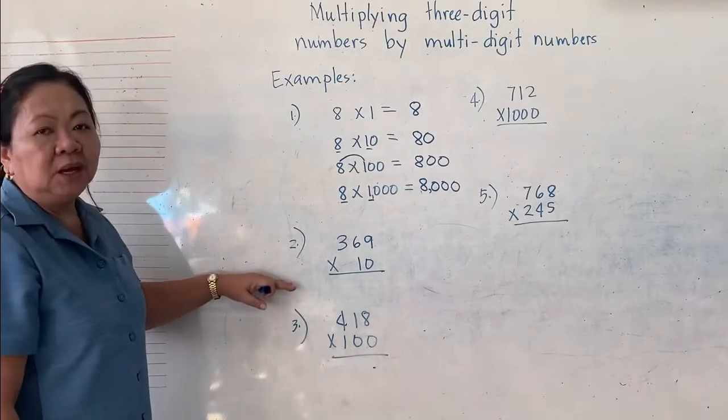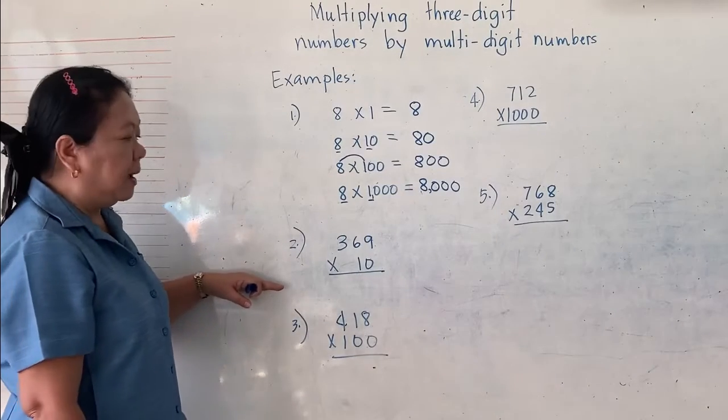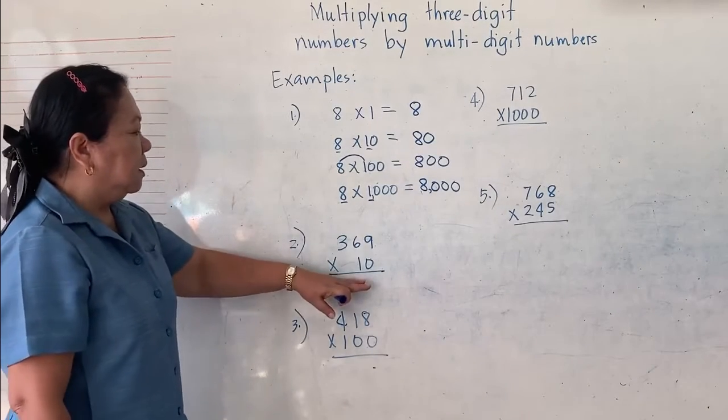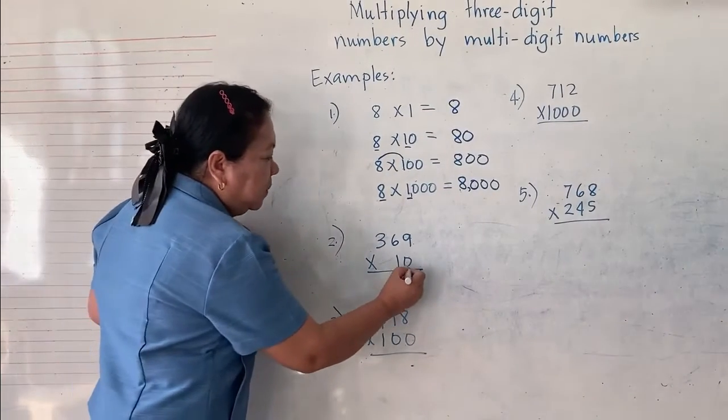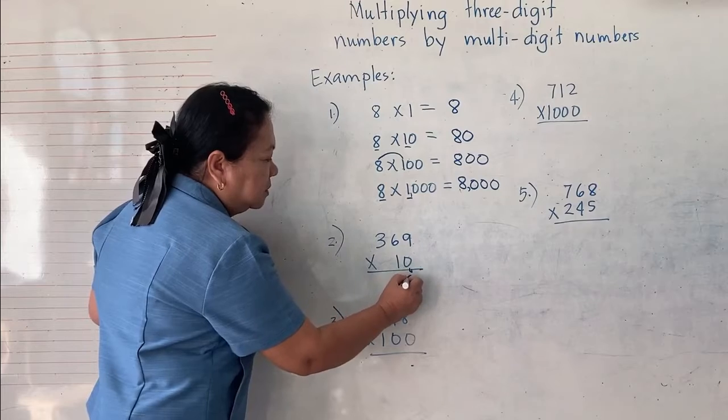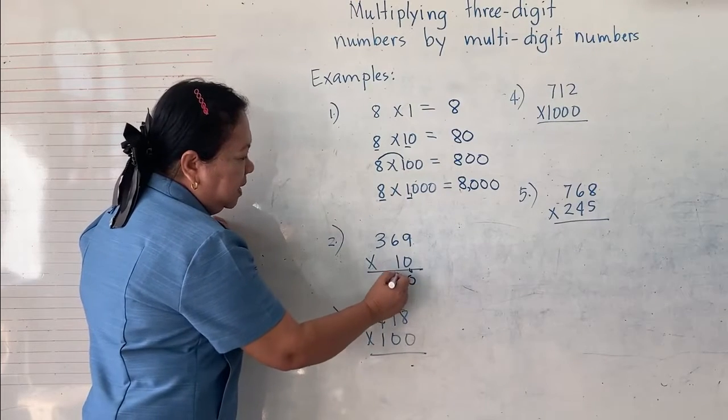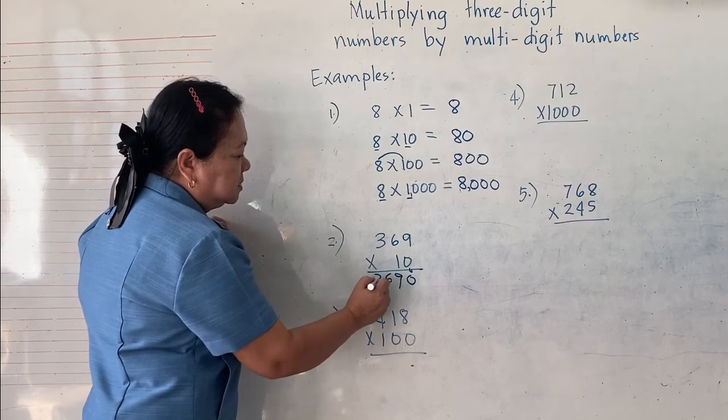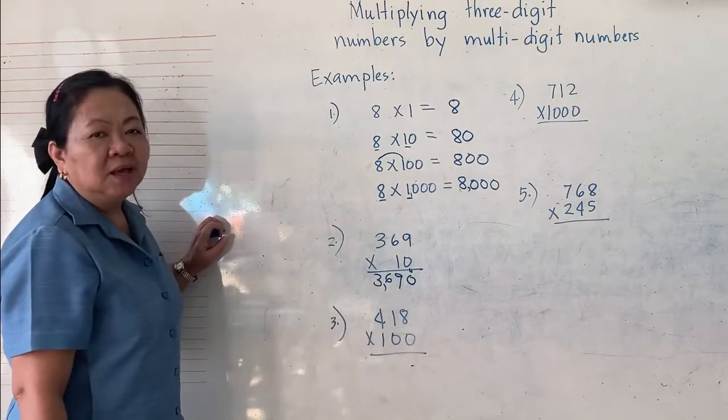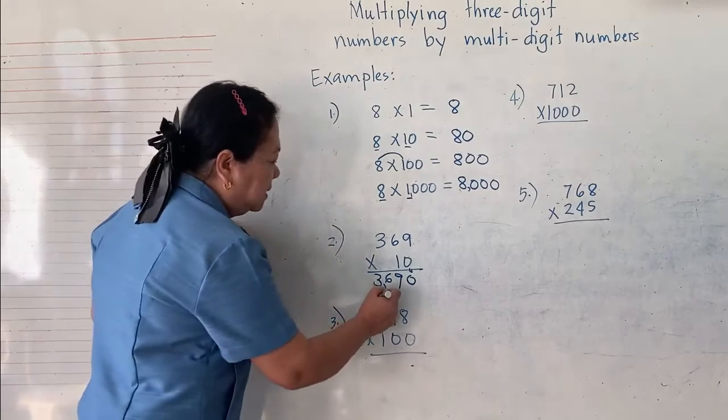Now, we will do it vertically. Multiplication by column. Here, 10 times 369. If like this, you will just bring down 0. And then, multiply 1 times 9 is 9, 1 times 6 is 6, 1 times 3 is 3. Therefore, the answer is 3,690.